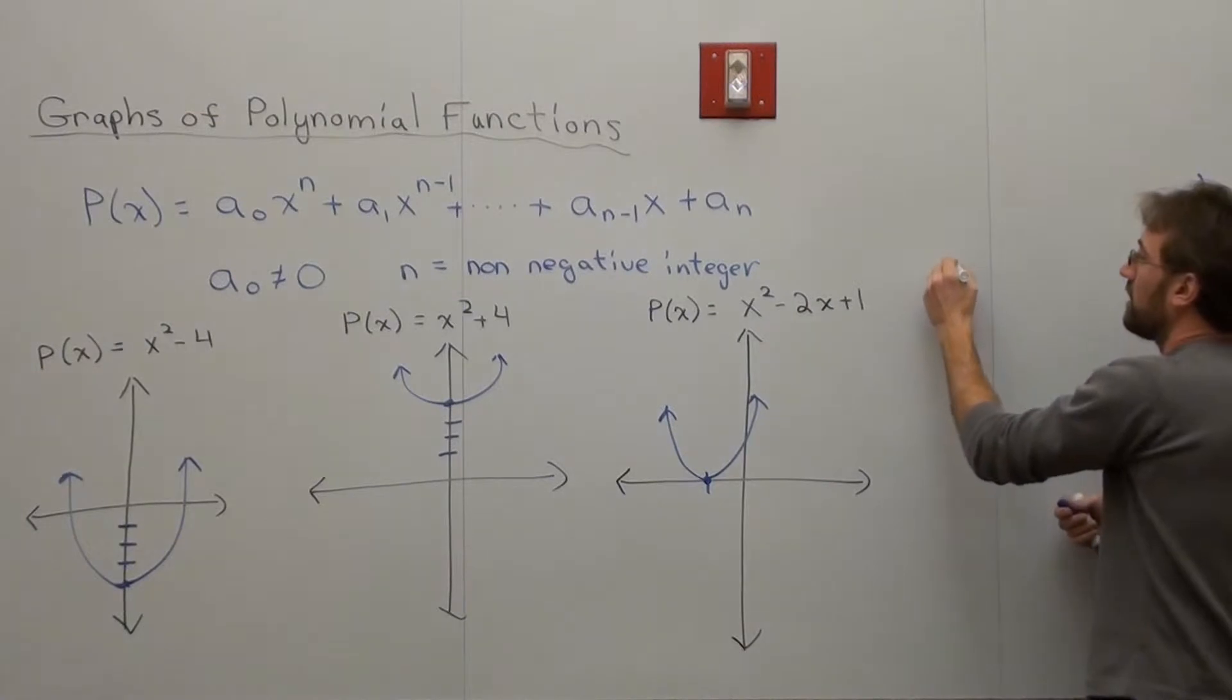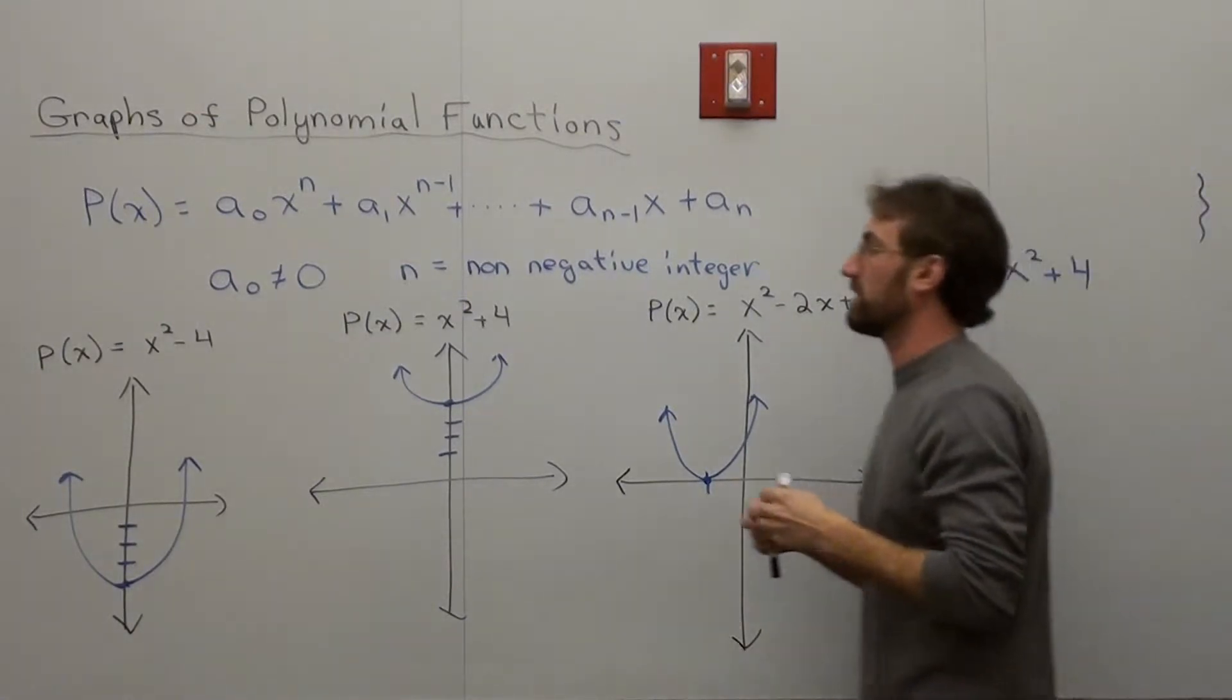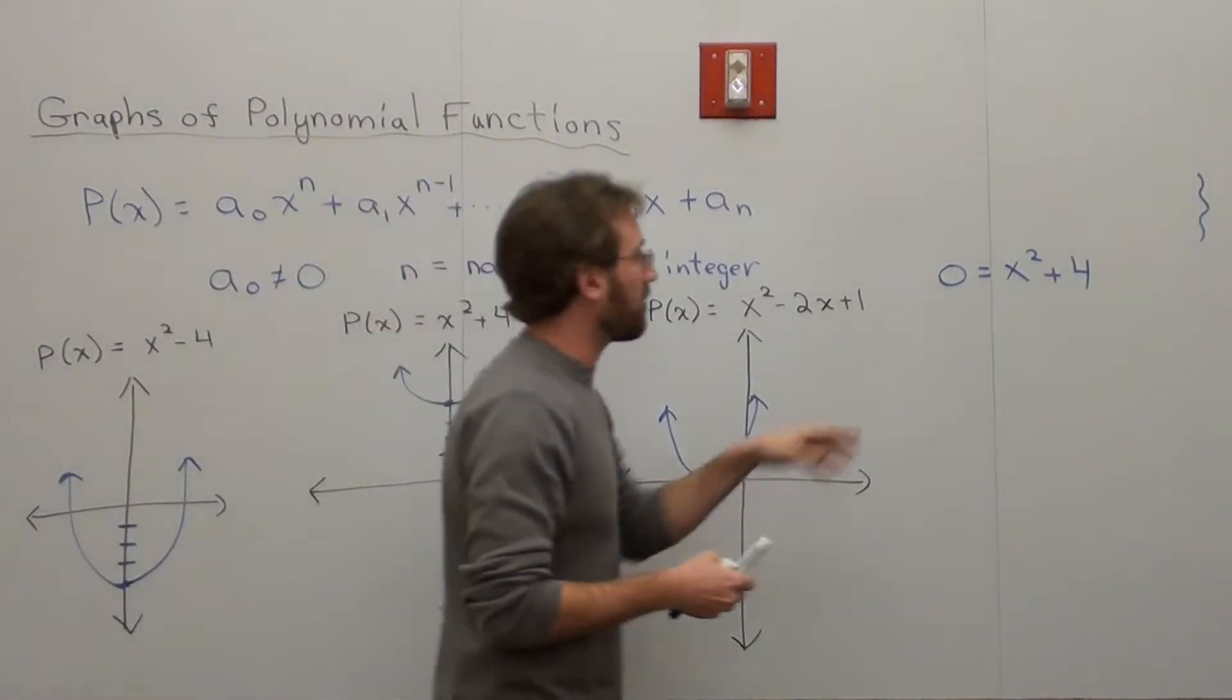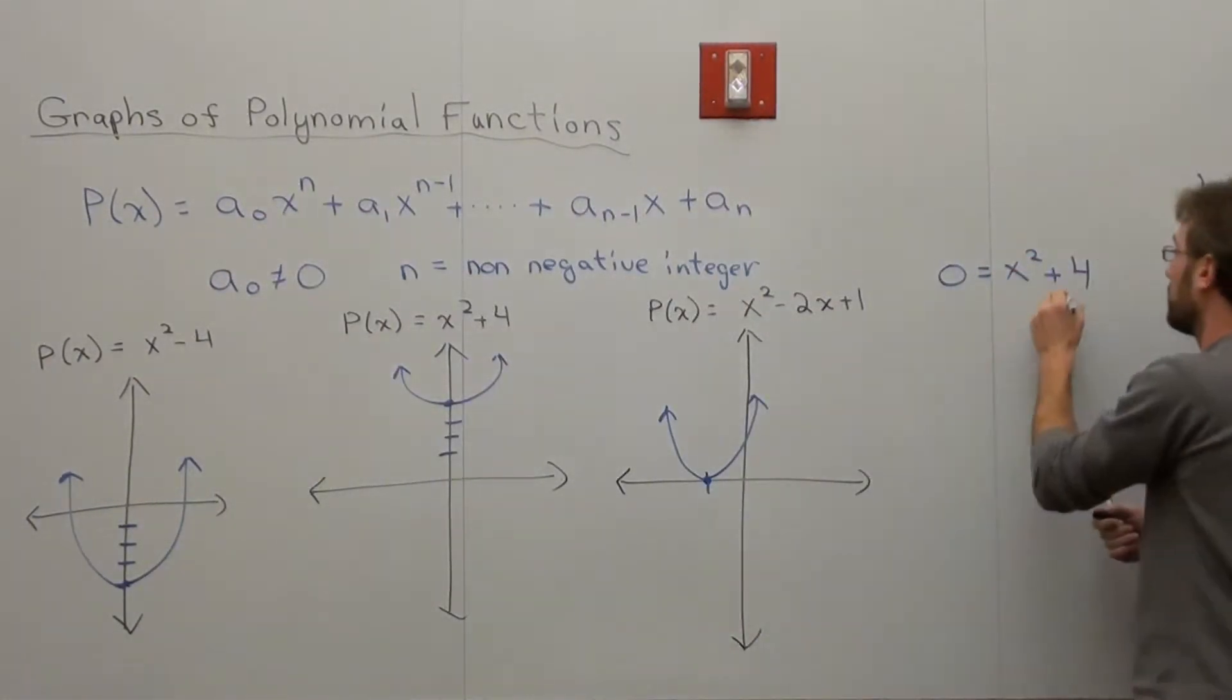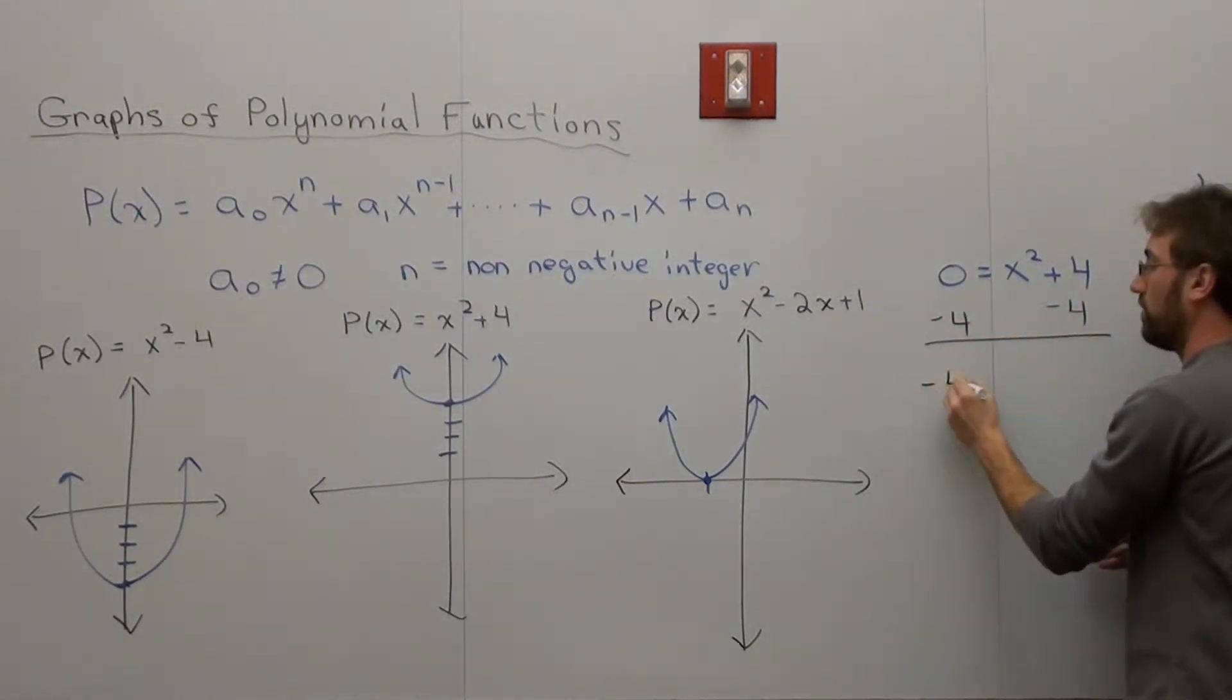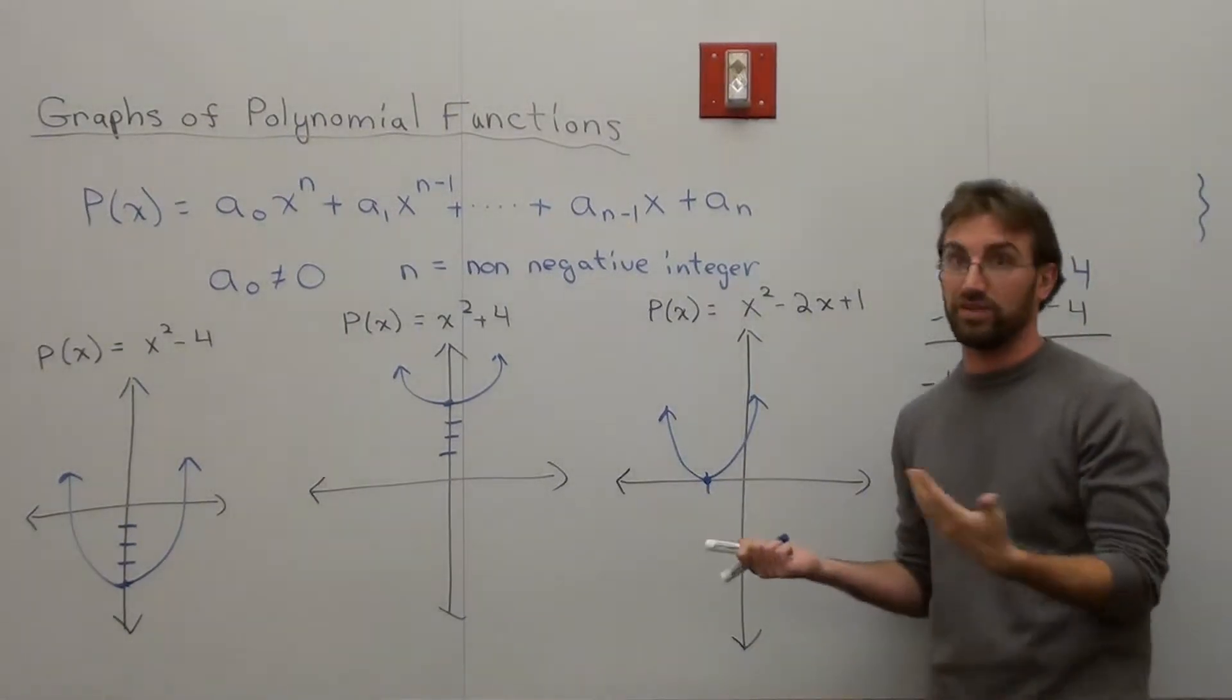This next one actually has two roots as well. They're imaginary roots though, they're not real. So I'm going to do that again. 0 equals x squared plus 4. I'm going to set my P(x) equal to 0—that's how I try to figure out my roots. And I'm going to subtract 4 on both sides. And I get negative 4 equals x squared, and I have to take the square root of both sides in order to figure out the x value.